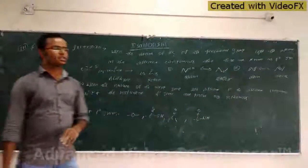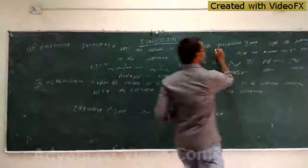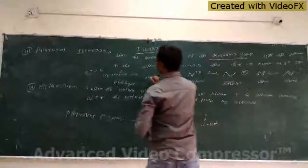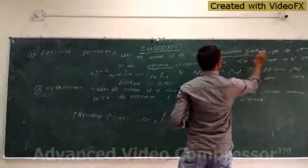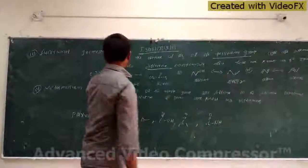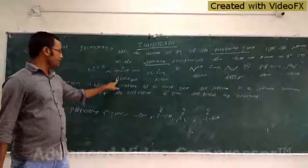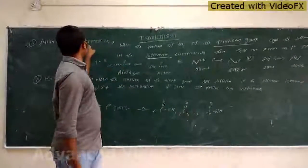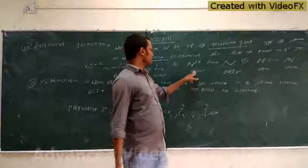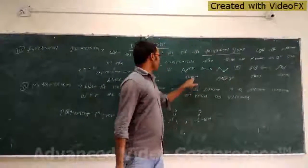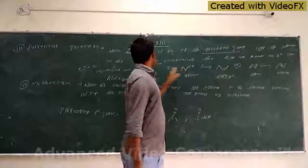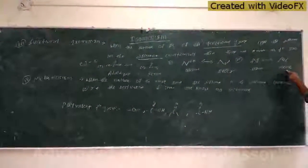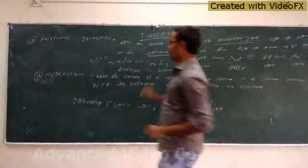So the next type is functional group isomerism. When the nature of the functional group itself is different in the given compounds, then you have functional isomers. Just see the example — this is a C3 compound. Here this is an alcohol and this is an ether. But the molecular formula is the same, referring to a different functional group. So this is a functional isomer. Second example is an OH group versus an ether group — both different, so this is also a functional isomer. And this is a carboxylic acid versus an ester — this is also a functional isomer.